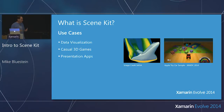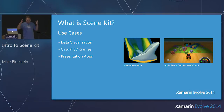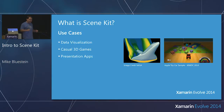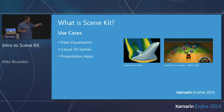So what would you do with something like SceneKit? You might start thinking of complex games — and you can make games. That's how it's been positioned in this recent release that's come to iOS 8. The term Apple has actually used is: casual 3D games.